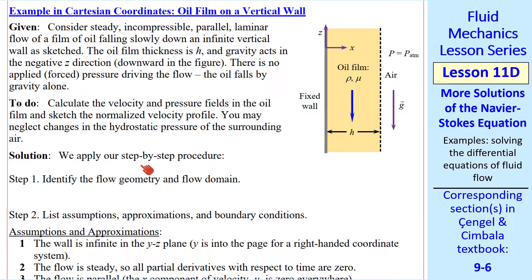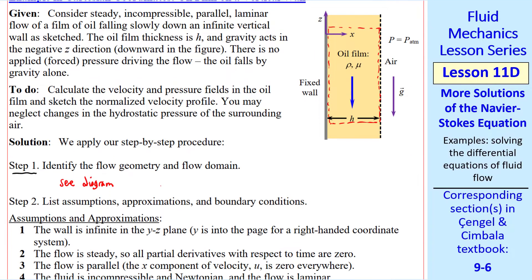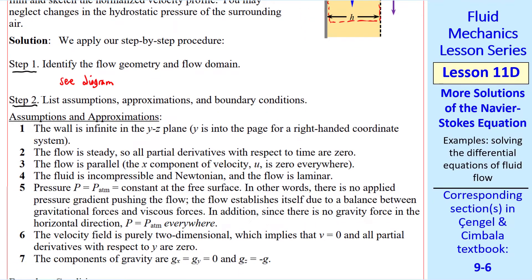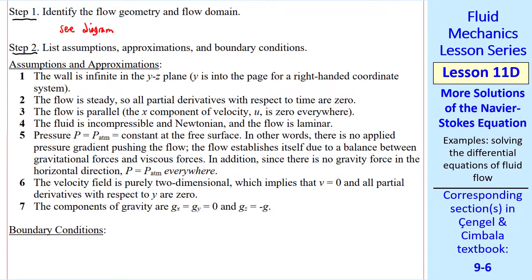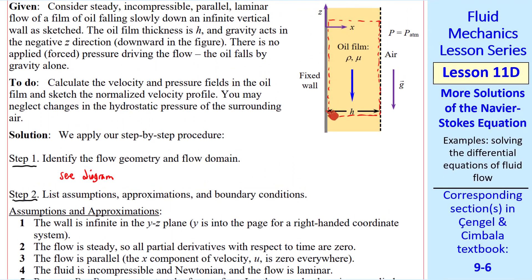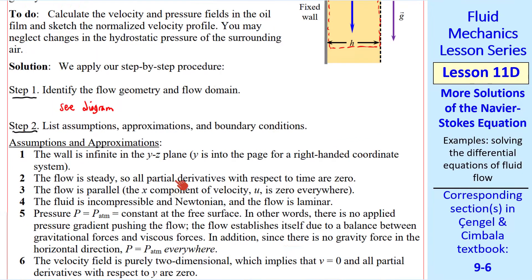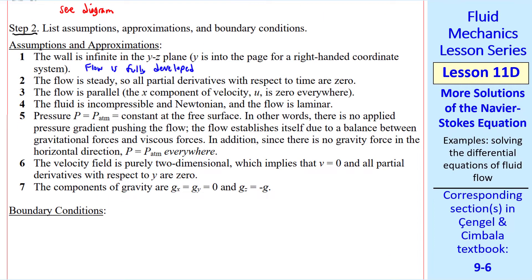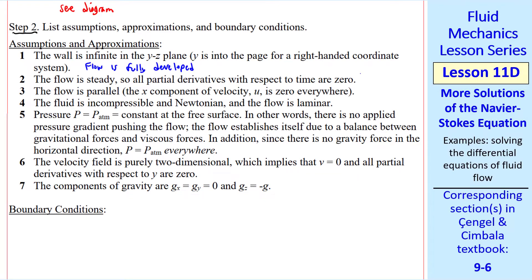To solve this, we apply our step-by-step procedure. Step one is to identify the flow geometry and domain. We set our domain as some section of this oil film — the height of this domain doesn't really matter. Step two is to list assumptions, approximations, and boundary conditions. Number one: the wall is infinite in the y-z plane, meaning there's nothing different here than there — this is another way of saying the flow is fully developed. Number two: the flow is steady, so del/del-t of anything is zero.